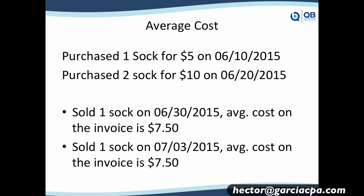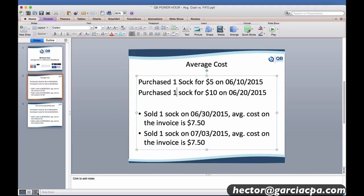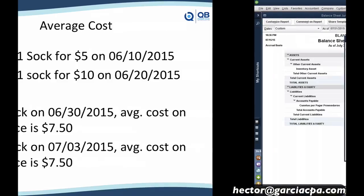Let's do average cost versus FIFO. Let's summarize the concept of average cost simply: one sock for $5 on June 10th, another sock for $10 on June 20th — just one of each on two different days. After purchasing both, we'll sell one sock on the 30th and the average cost is going to be $7.50, and then sell one sock later and the average cost is again $7.50. This is the framework we'll use to show how FIFO works.